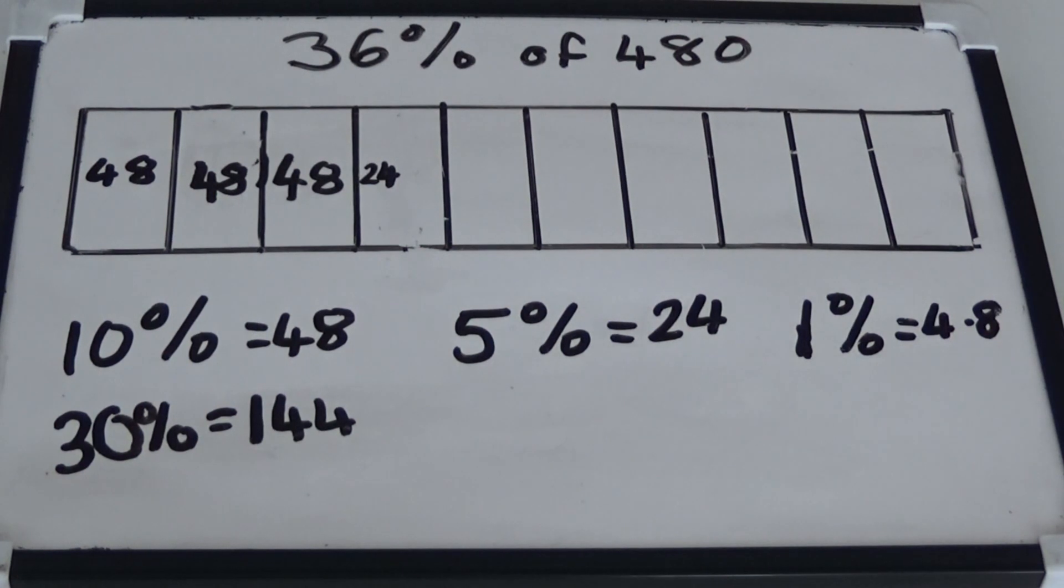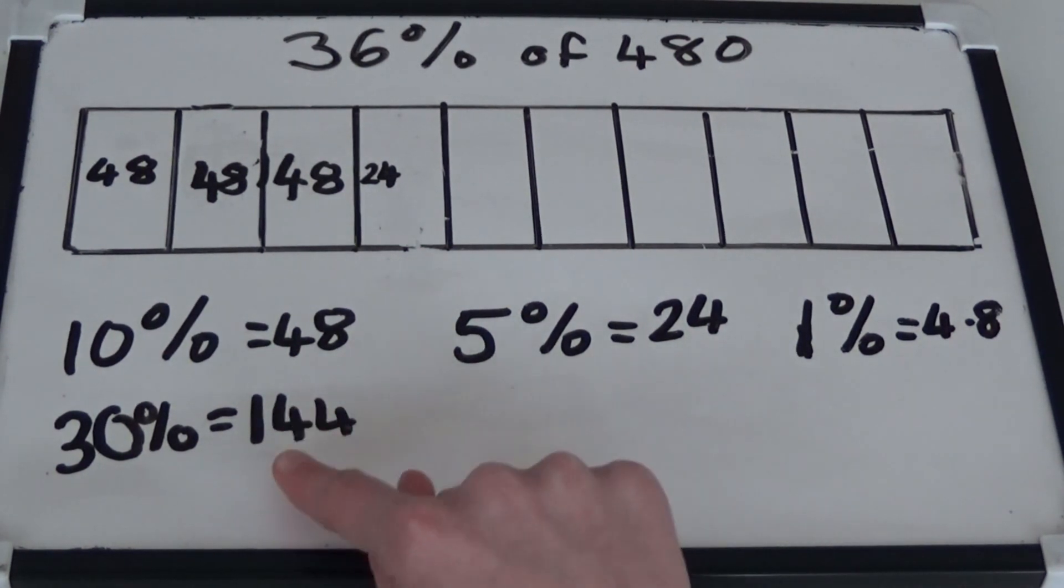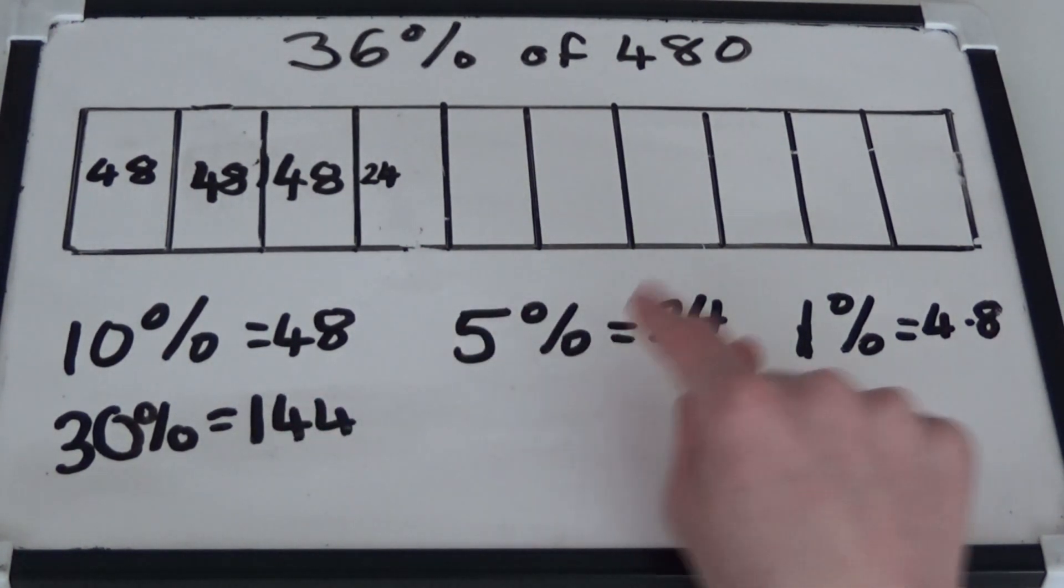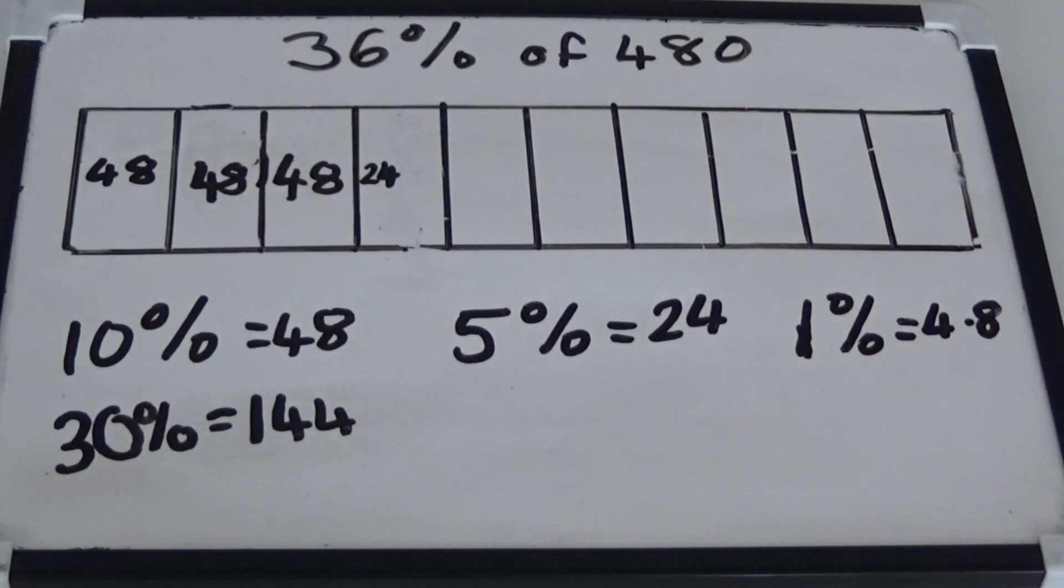The last thing we need to do is add together 144, 24 and 4.8. This gives us a total of 172.8. So 36% of 480 equals 172.8.